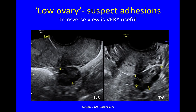Often in reports on women who later turn out to have endometriosis, there's a comment that the ovary is low. The transverse view is very useful here — you must suspect adhesions when you see an ovary this low. Here you can see the bladder at the front, the uterus, the cervix, and this ovary adherent to the back of the cervix. In this plane, you will see that it is attached to the uterosacral ligaments.